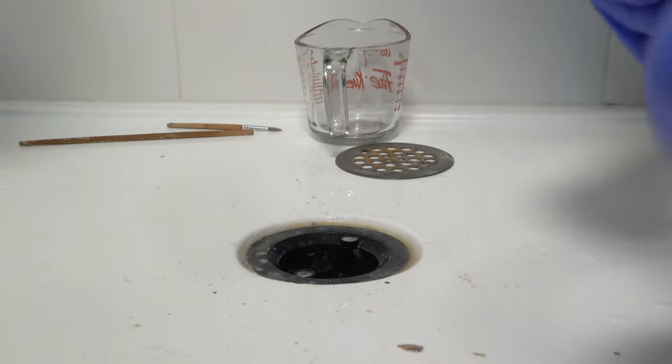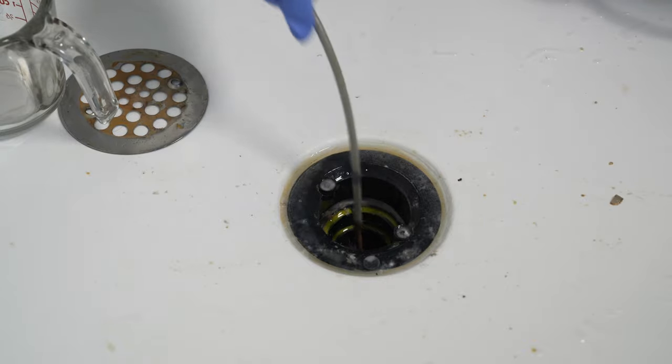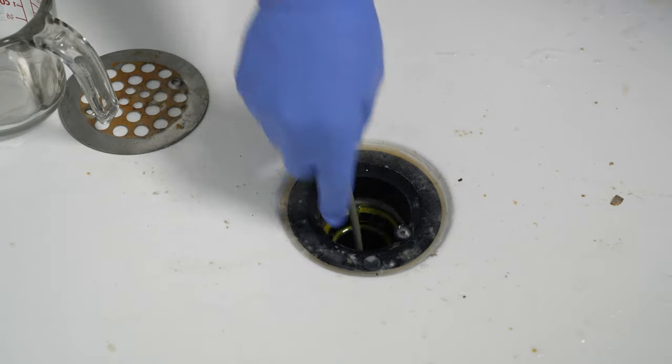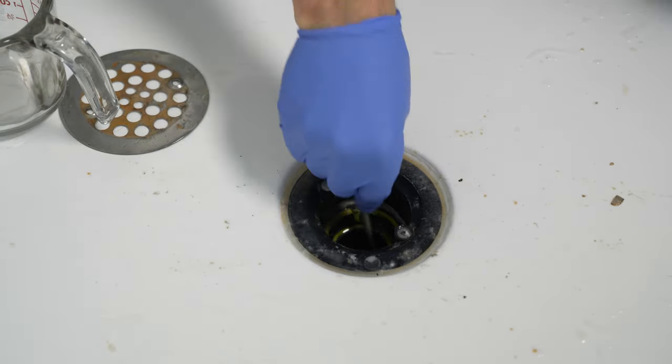If it still didn't help, you need to use a drain snake. Insert the snake into the drain and twist it gently to help it move through the pipes and clean everything inside.